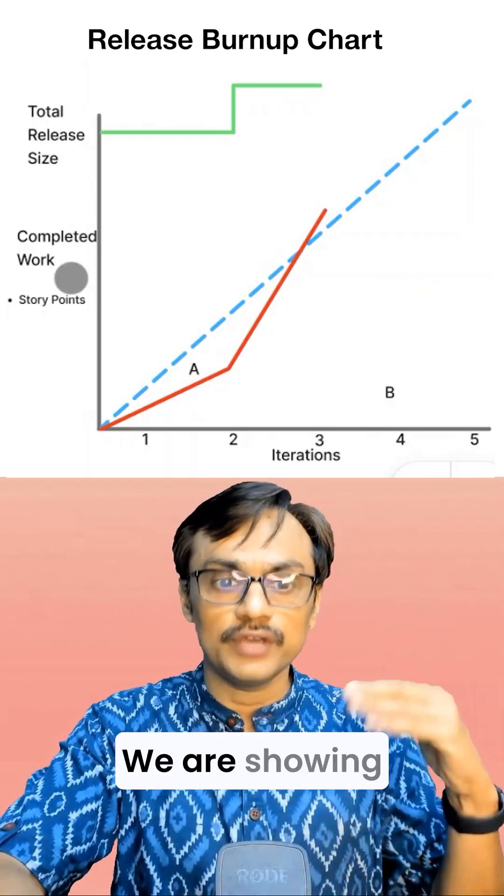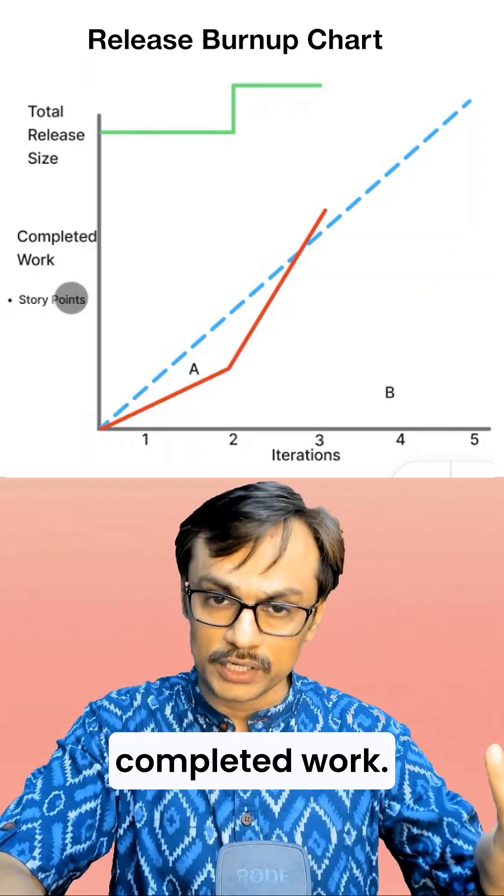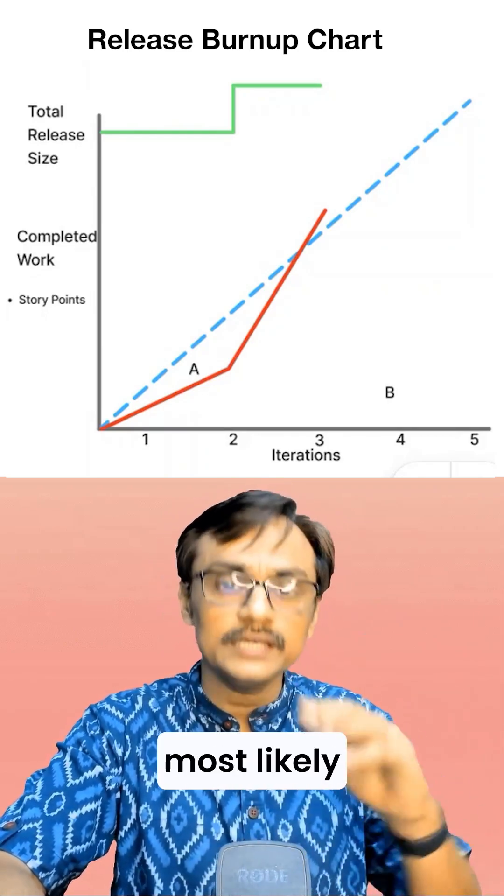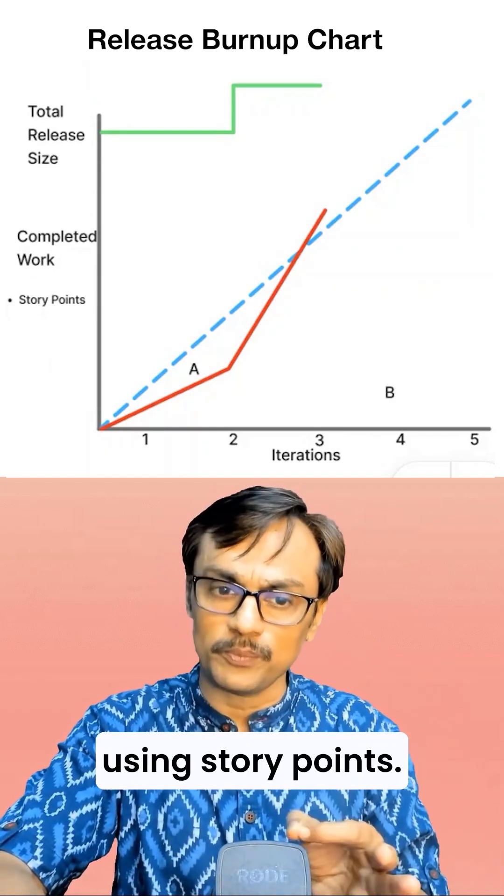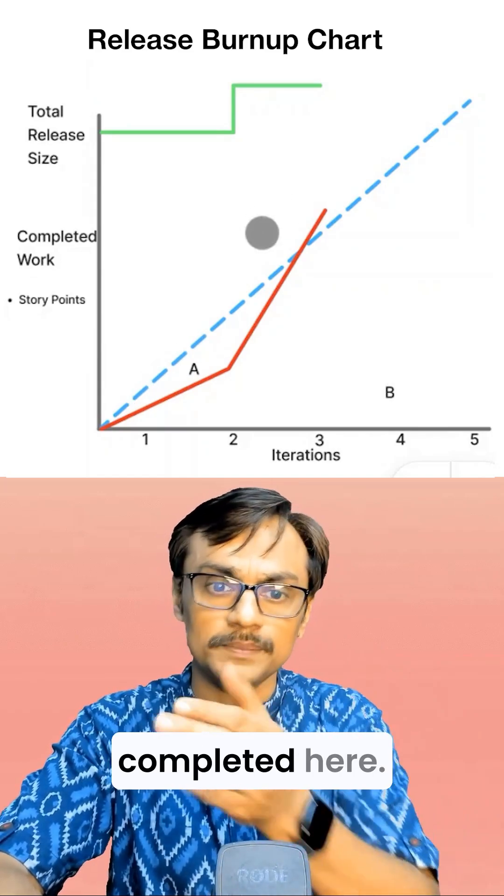In the y-axis we are showing completed work. Now we need to quantify the work. Most likely for a release burn up chart you will quantify the work using story points. So how much story point work has been completed.